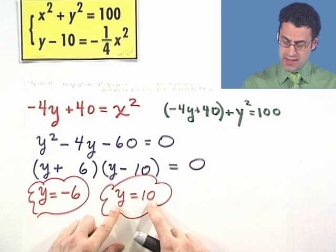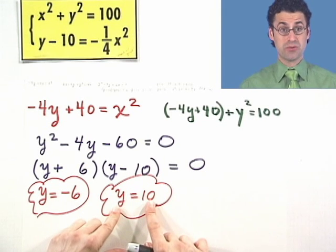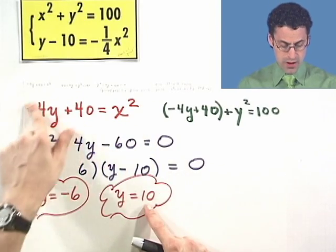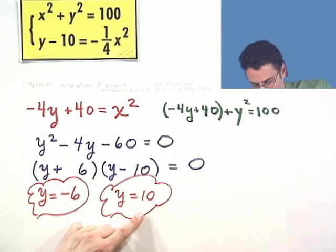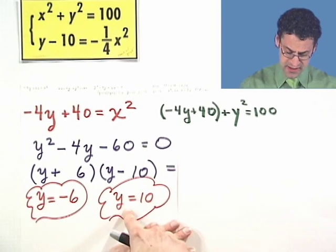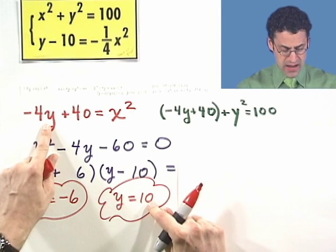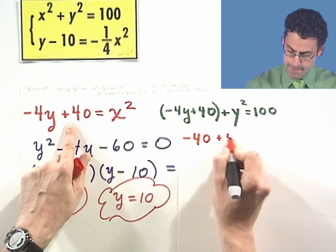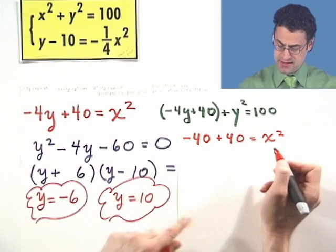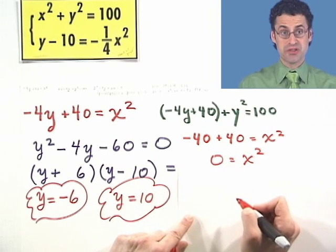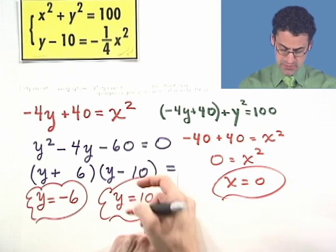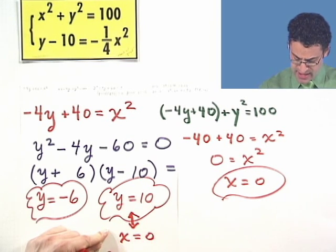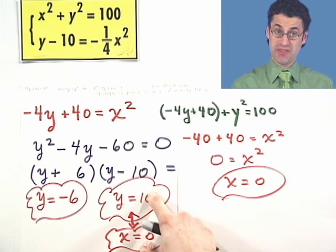Let's take y equals 10 first. Going back to the red equation x squared equals negative 4y plus 40, I plug in 10 for y: negative 4 times 10 gives negative 40, so negative 40 plus 40 equals x squared, meaning x squared equals 0. There's only one number whose square is 0, so x equals 0. The first solution is the ordered pair (0, 10).